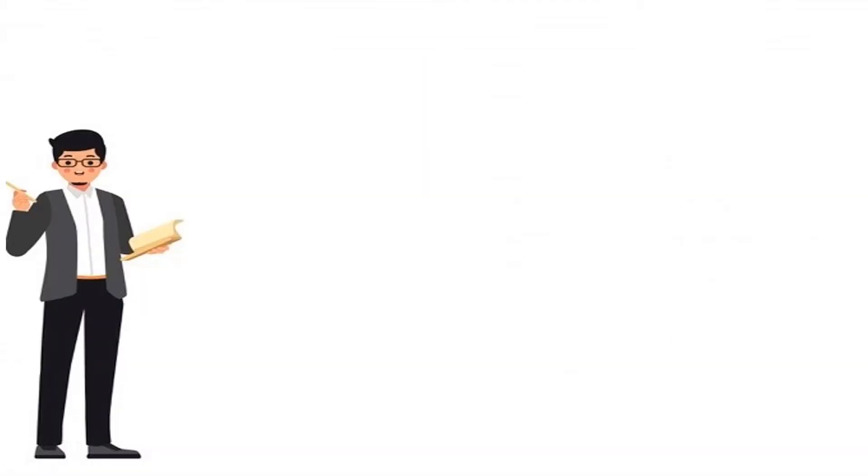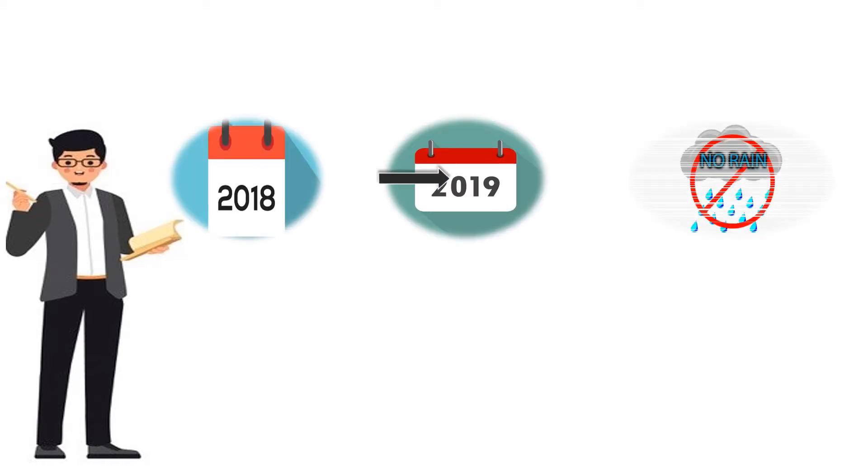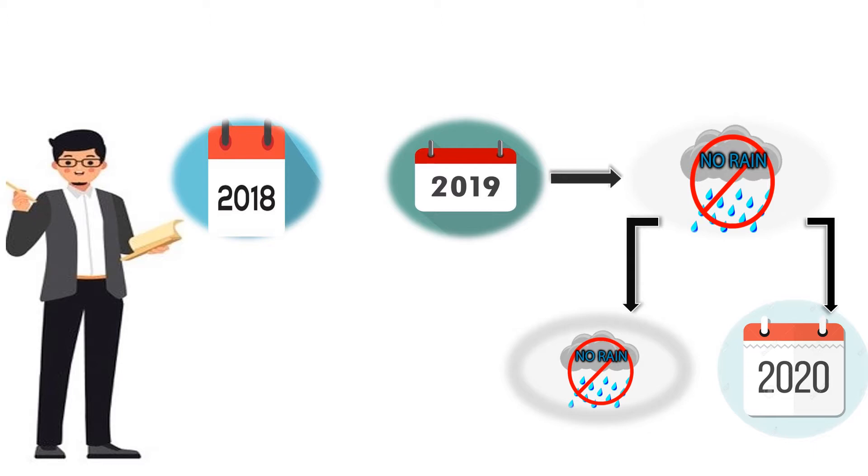For example, consider two differing years, 2018 and 2019. In both years there is no rainfall. By taking it into consideration, we can also estimate there will be no rainfall in the year 2022. Here, this lets us know from past experience we are estimating the future.